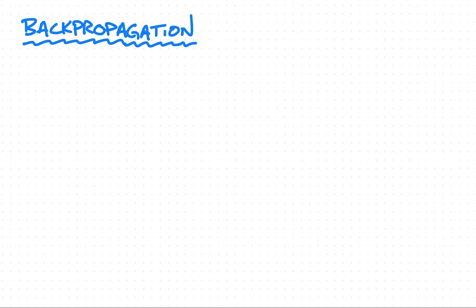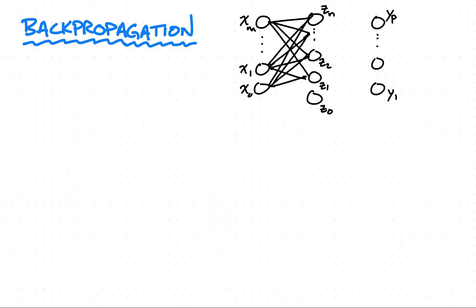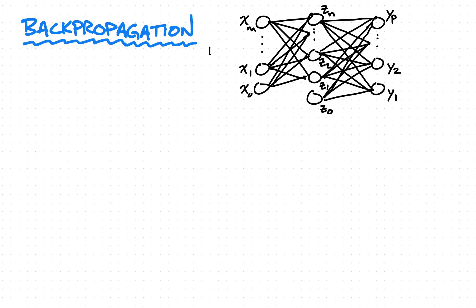Let's talk about backpropagation in neural networks. In order to understand backpropagation, we need to first draw the structure of our network. In this example, we're only going to deal with three layers: the input, the hidden layer, and the output layer. But please know that this will generalize to more than one hidden layer.